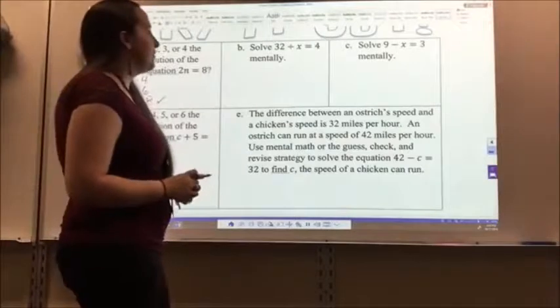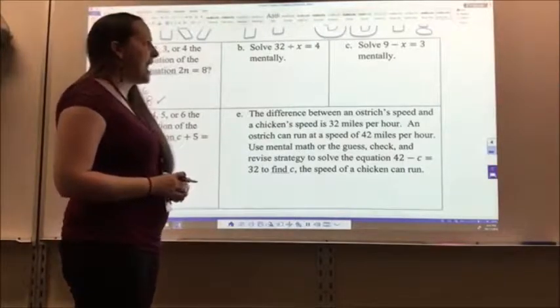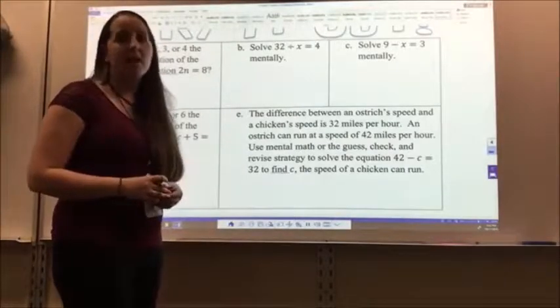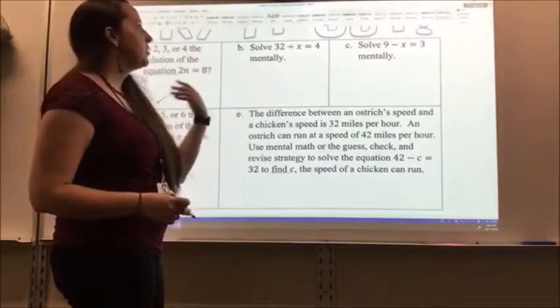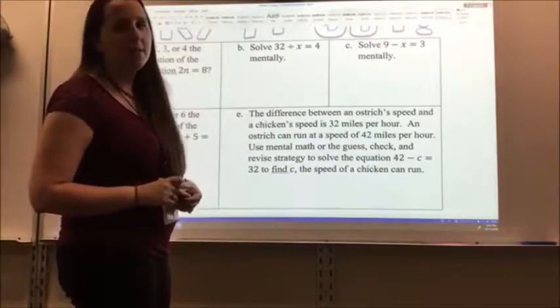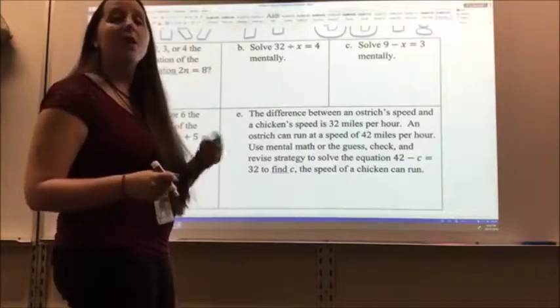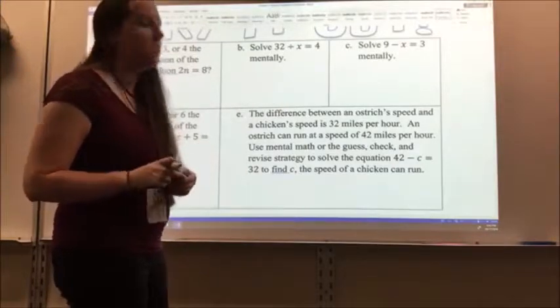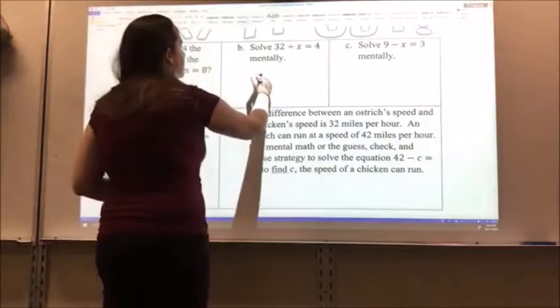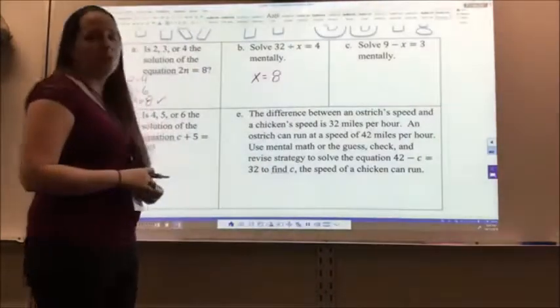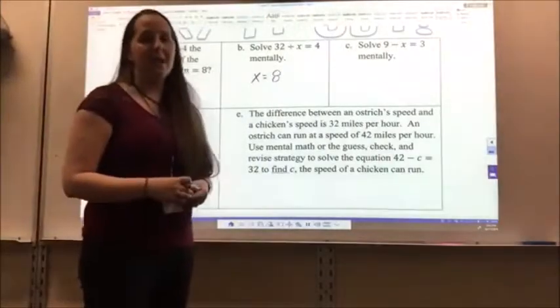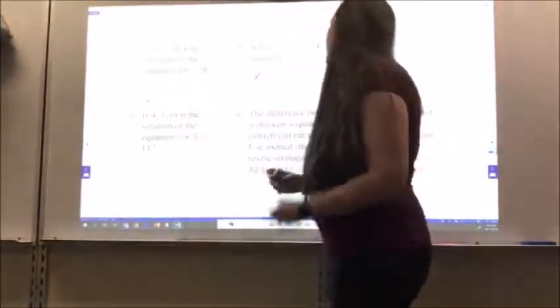For letter B, I have solved 32 divided by x equals 4 mentally. So I want to think about it. What divided by 32 will get me 4? I can also look at it backwards. 4 times what gives me 32? So x equals 8, because 8 times 4 gives me 32. So 32 divided by 8 has to get me 4.